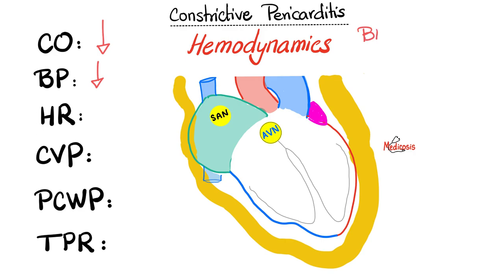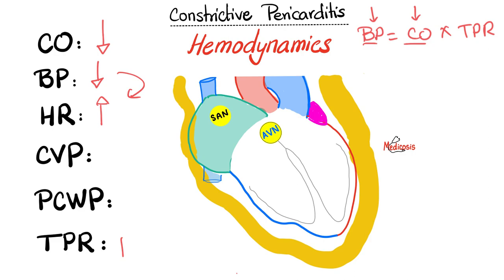If there is less cardiac output, there will be less blood pressure, because blood pressure equals cardiac output times total peripheral resistance. When blood pressure decreases, the baroreceptor reflex activates — the brain sends sympathetic fibers to raise heart rate and constrict vessels. The sympathetic raises heart rate by stimulating beta-1 receptors and increases resistance by constricting vessels through alpha-1 receptors.